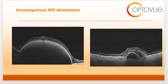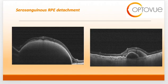This last slide shows what we call a serosanguinous RPE detachment, associated specifically with polypoidal choroidal vasculopathy. Serosanguinous RPE detachments are composed of serous fluid and blood — 'sero' meaning serous and 'sanguine' meaning blood — so there are two components to the pigment epithelial detachment. OCT findings typical of polypoidal choroidal vasculopathy include multiple large PEDs, as seen in these images.